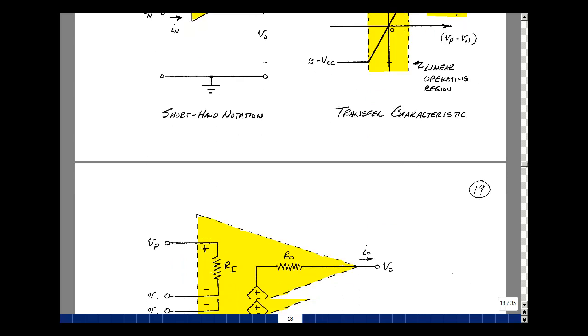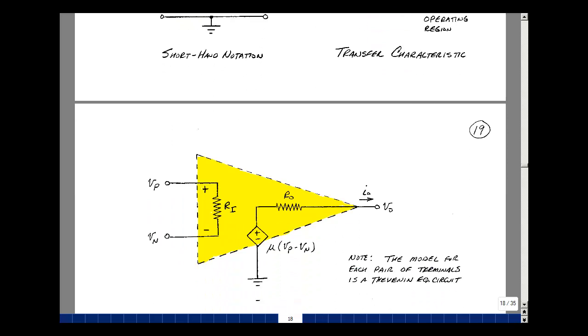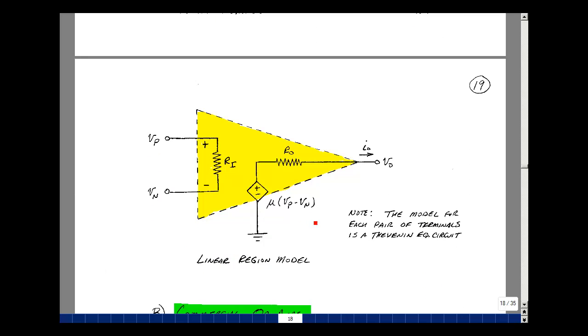In this linear region, we have an output voltage that's dependent on the difference of the input voltages times the scale factor mu. When you apply a difference of voltage across these pins, a current will flow, and you effectively get some resistance. Basically, what we have here is a Thevenin-equivalent circuit on the output, and in some sense, you have a Thevenin-equivalent circuit on the input.